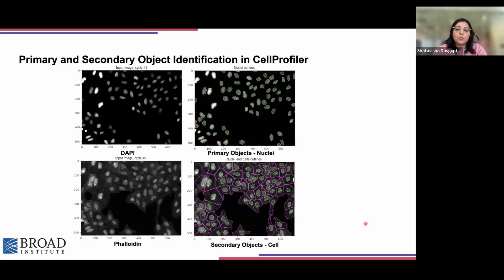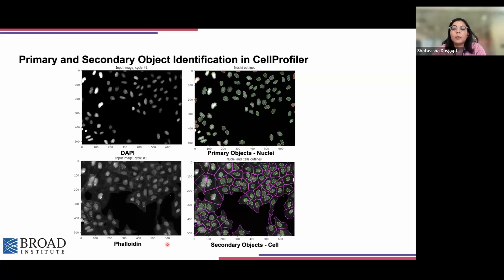These are the principles which CellProfiler uses. The output window from CellProfiler will look like this when we perform primary object identification using the DAPI channel, which stains the nuclei — outlined in green. If we have a membrane marker or markers for other organelles, we can use that channel to identify the secondary object, using the primary objects as a seed. By subtracting the nuclei from the secondary object, we are left with the tertiary object, which would be the cell cytoplasm. Identifying all these individual compartments allows us to perform many different kinds of measurements.